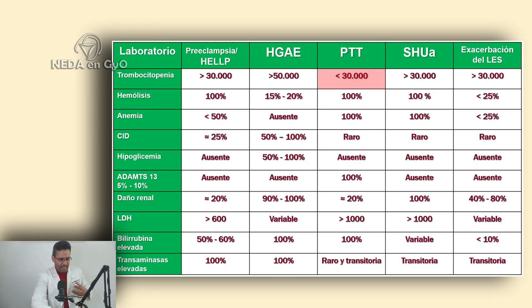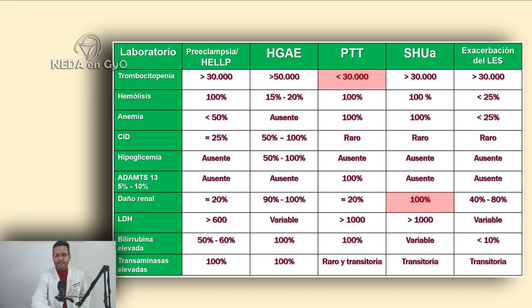Renal damage is very important, especially today when many patients diagnosed with preeclampsia or HELLP syndrome end up on dialysis. In HELLP syndrome, only about 20% of cases have renal damage. Acute fatty liver: 90 to 100%. TTP: approximately 20%. Atypical hemolytic uremic syndrome: 100% of cases present with renal damage. Remember — in aHUS symptoms often exacerbate after delivery, even in patients with few preeclampsia features, causing severe renal insufficiency. Lupus exacerbation: 40 to 80%.